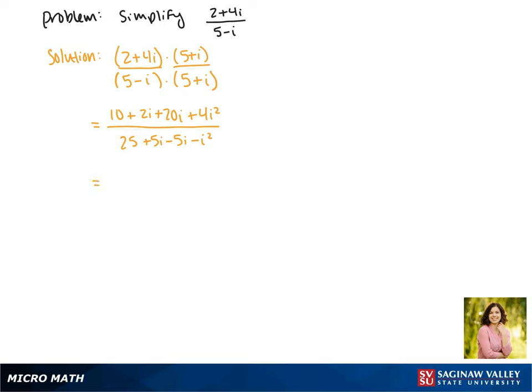Now we can combine like terms. In the numerator we get 10 plus 22i. This i squared is actually negative 1. Negative 1 times 4 makes it negative 4.